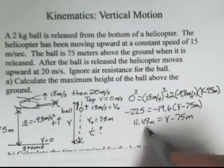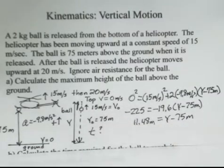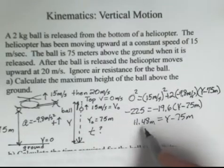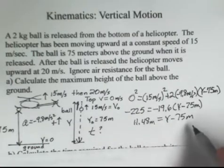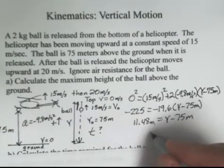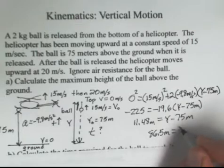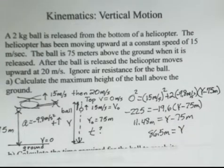So this 11.48, that's the additional distance the ball goes upward to the top of the motion, the distance it goes upward after it's released. The total distance from the ground will now add 75 both sides. And I come up with 86.5 meters roughly is this maximum height above the ground.